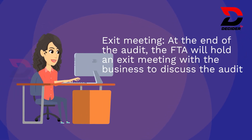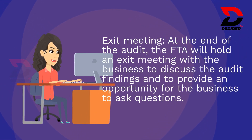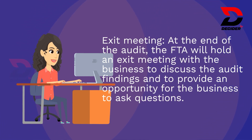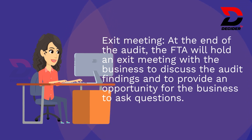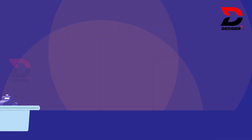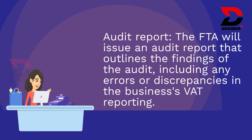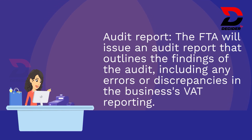Exit meeting: At the end of the audit, the FTA will hold an exit meeting with the business to discuss the audit findings and to provide an opportunity for the business to ask questions. Audit report: The FTA will issue an audit report that outlines the findings of the audit, including any errors or discrepancies in the business's VAT reporting.